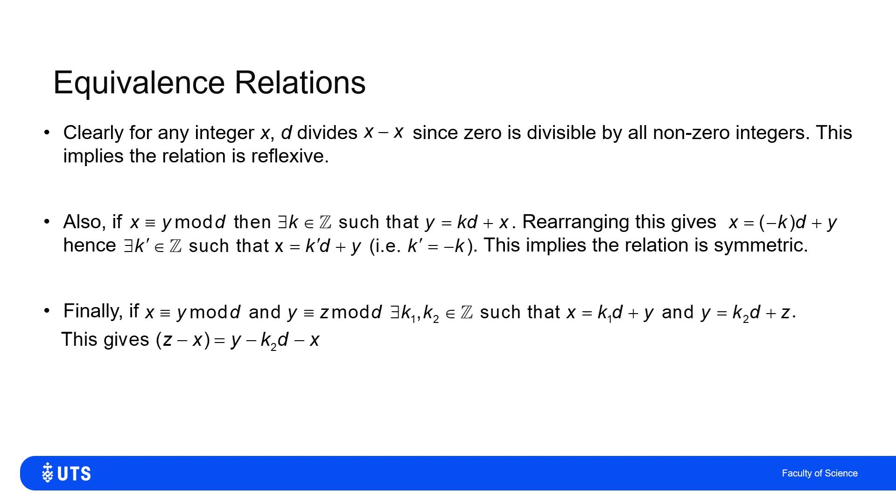So simply pulling that through, if I do Z minus X, then I've got Y minus K2 lots of D minus X. So if I replace that with the statement for X, then I will get that Z minus X will be minus K1 minus K2 multiples of D. So I have this transitivity.